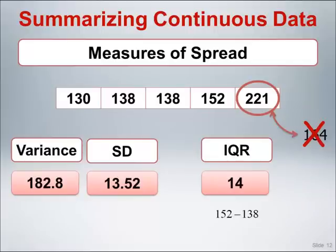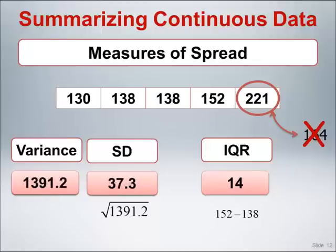As before, if I replace the largest of the five observations, a pressure of 164 with a pressure of 221, the variance shifts from a value of 182.8 to a value of 1391.2, and the standard deviation shifts from a value of 13.5 to 37.3. In contrast to these sizeable shifts, the IQR, like the median, is unaffected by the increase in this single value.